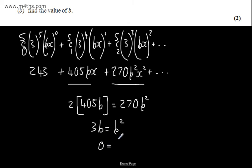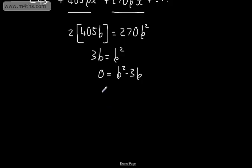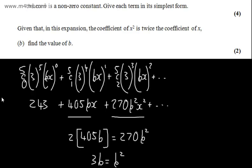Setting the left-hand side to 0, b squared minus 3b equals 0. We can see from this we have b times b minus 3. We know that b isn't going to be equal to 0. Therefore, we can say that b equals 3.